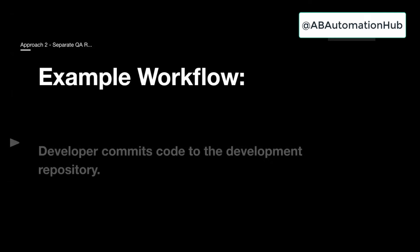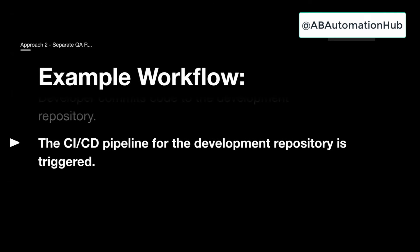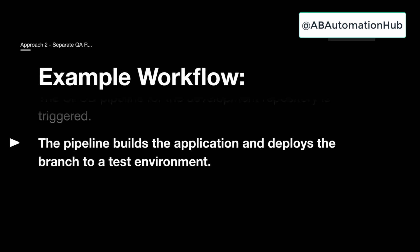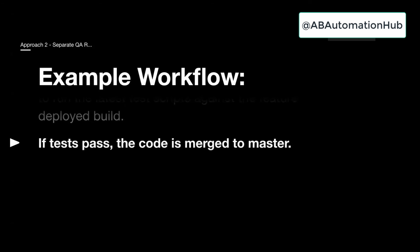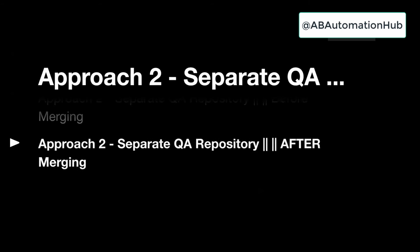Let's understand the example workflow. The CI/CD pipeline for the dev repository is triggered. The pipeline builds the application code and deploys the branch to staging or another lower environment. This pipeline then triggers the QA repository pipeline to run the latest scripts against the feature-deployed build — meaning your test cases are executed on the lower environment. If the test cases pass, the code is merged into master.